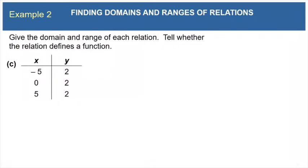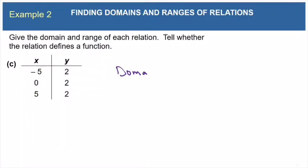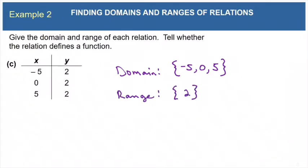And here we have relation C, written in a table format. An x value of -5 matches a y value of 2, an x value of 0 also matches a y value of 2, and an x value of 5 matches a y value of 2. So the domain is {-5, 0, 5} and the range is {2}. This is a function because each x value only matches to one y value.